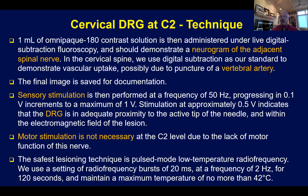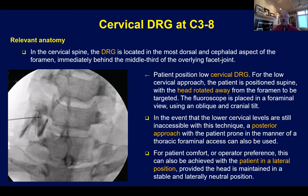For contrast injection, I inject very small amounts — 0.8 to 1.0 mLs — and use either continual live fluoroscopy or digital subtraction angiography to confirm the needle is not in the vertebral artery. For pulsed radio frequency, I perform sensory stimulation at a frequency of 50 hertz, progressing in 0.1 volt increments to a maximum of 1 volt. Stimulation at approximately 0.5 volts indicates that the DRG is in adequate proximity to the active tip of the needle and within the electromagnetic field of the pulsed electrical energy. Motor stimulation is not necessary at this level. The safest technique is low-dose pulsed RF of the C2 DRG.